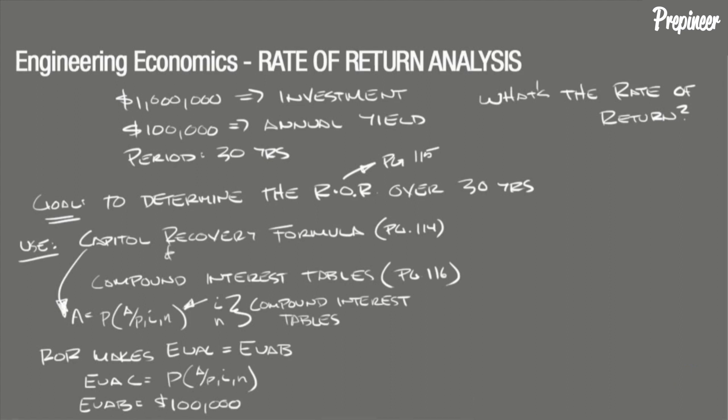Now setting these two values against each other, we get $1,000,000 times A over P IN is equal to 100,000. So we have A over P IN equal to 0.10 when we rearrange and solve for that factor, and we also have a period of 30 years.